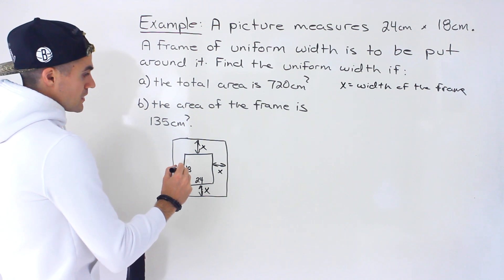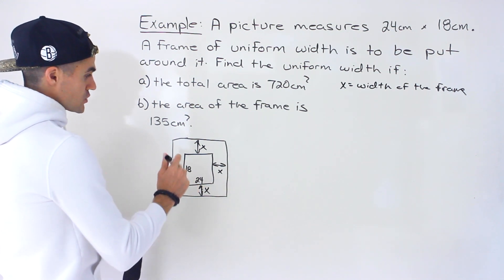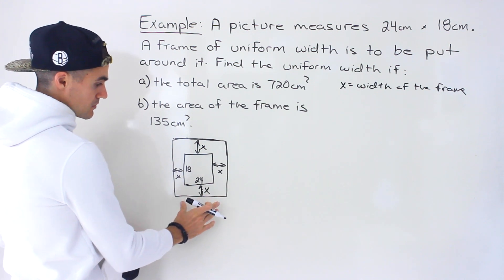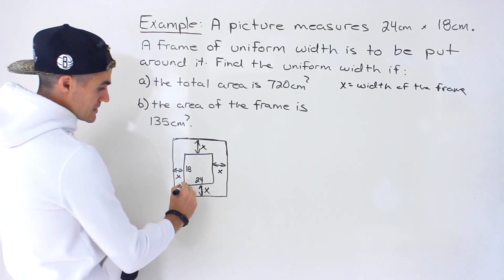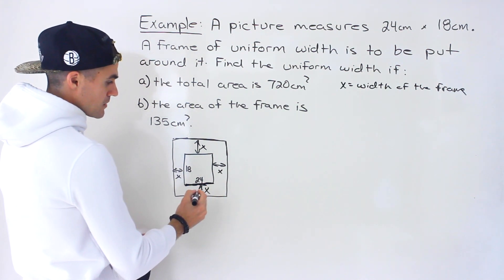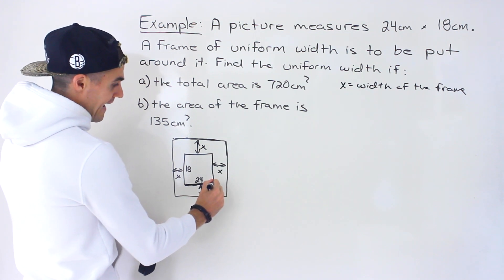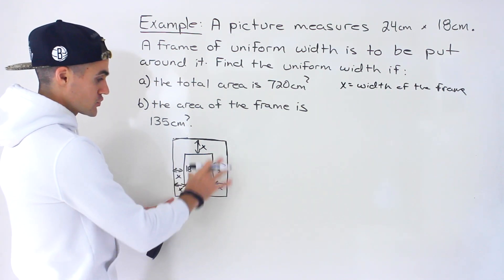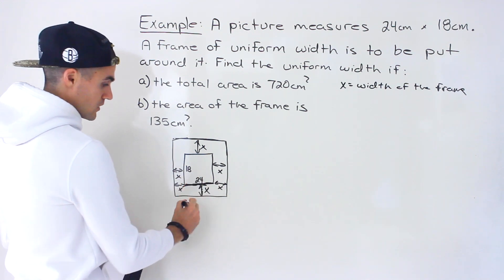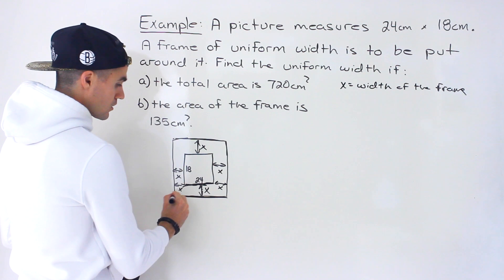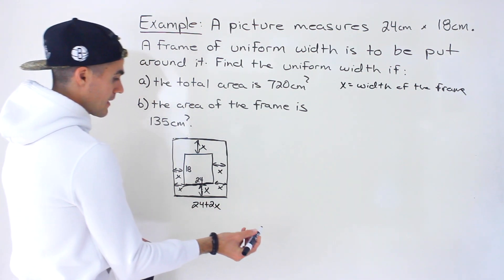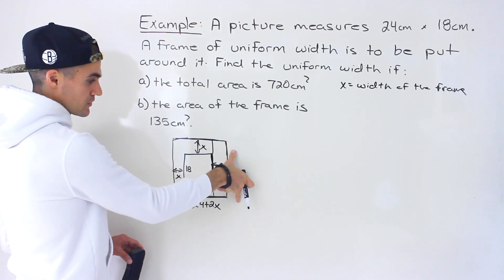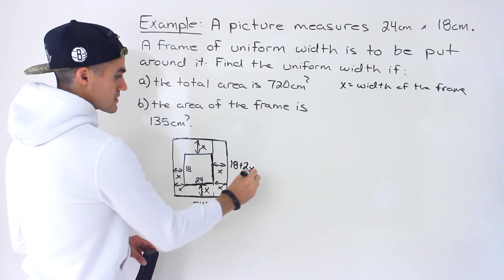We can create expressions for the total area. The total area is length times width. The length of the picture is 24 centimeters, and if we add x on each side, the total length becomes 24 plus 2x. Similarly, the width of the picture is 18 centimeters, and adding x on each side gives a total width of 18 plus 2x.